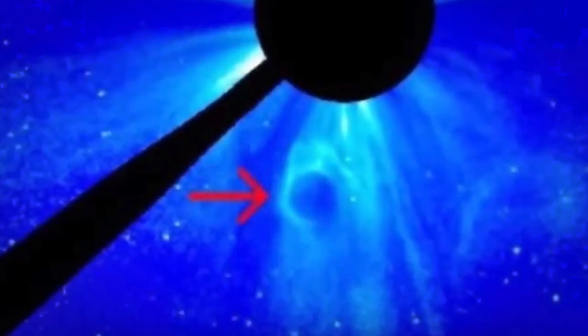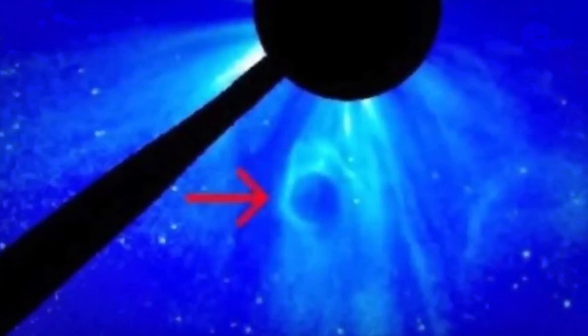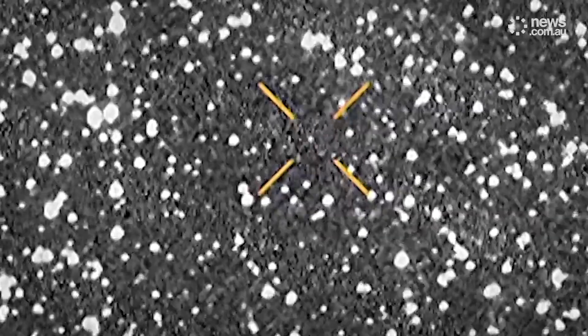The data shows intense cyanide and nickel production with zero iron content. Most comets contain iron as a fundamental building block. This one breaks every rule we thought we knew. The eerie green glow comes from cyanide gas and diatomic carbon molecules fluorescing under solar radiation. Normally, these appear only in trace amounts, never as dominant features.